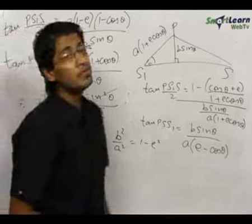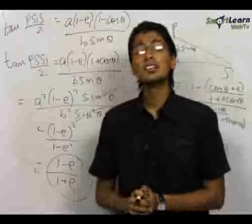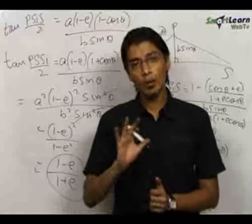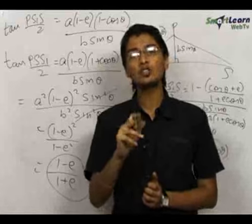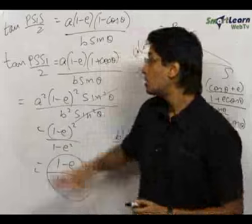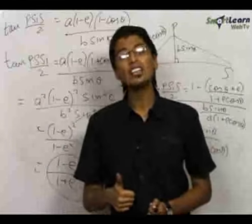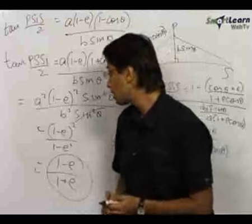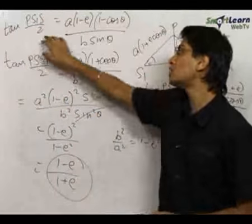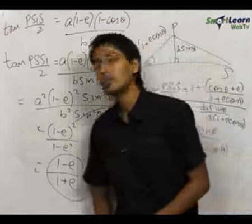Hence, we have seen that this was a very important problem, requiring knowledge of the geometry of triangle PS₁S, where P is any general point on the ellipse and S₁, S are the two foci of the ellipse x²/a² + y²/b² = 1. Using trigonometric identities and analytical geometry, we have proved that tan(∠PSS₁ / 2) · tan(∠PS₁S / 2) = (1 - e) / (1 + e).